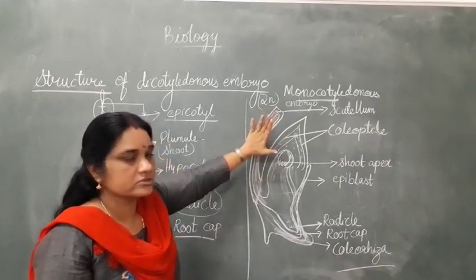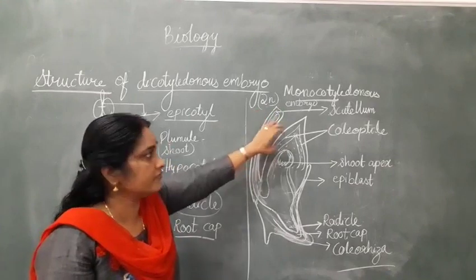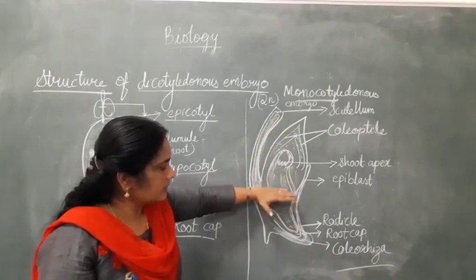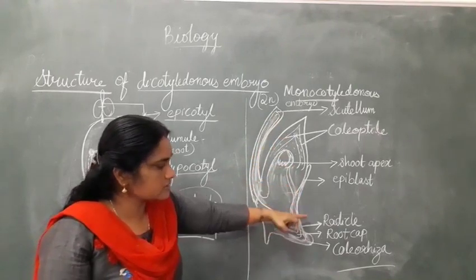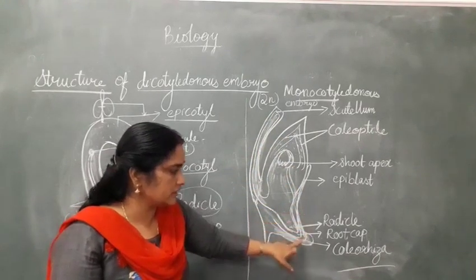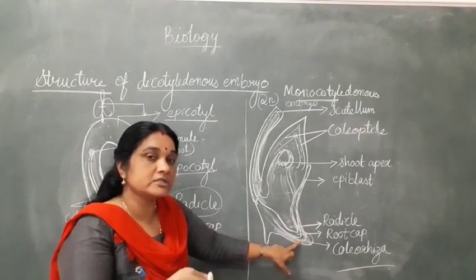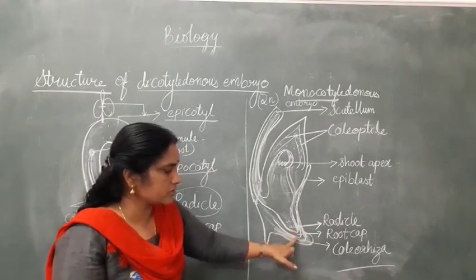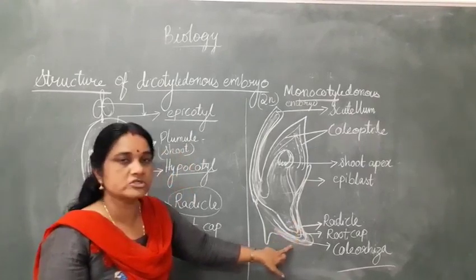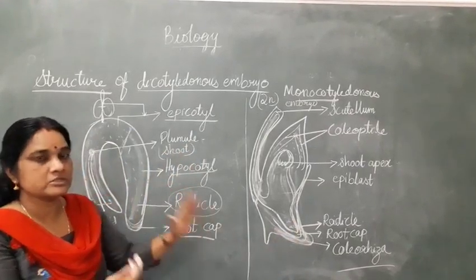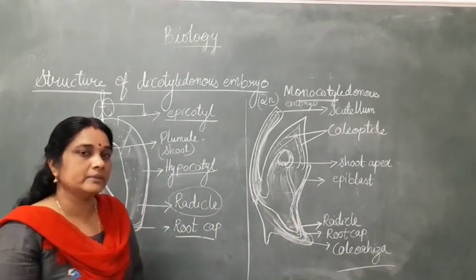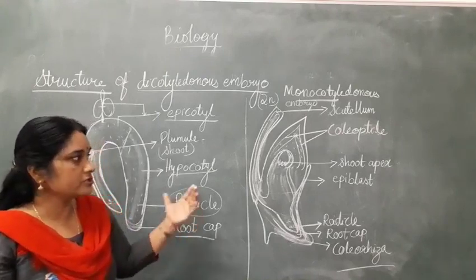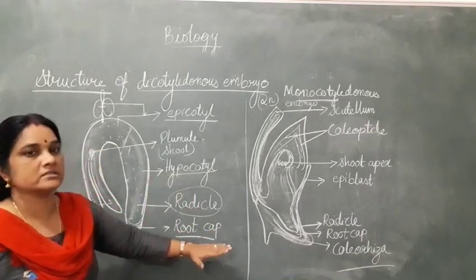This is a very important part. Please draw the diagram neatly, label the parts, and learn. This will be asked as a diagrammatic question — you have to label the parts, identify each part, and state its function. For example: the coleoptile covers the shoot apex; below the embryonal axis is the radicle, which gives rise to the root system, covered by the root cap; and the whole thing is covered by the sheet-like coleorhiza. Please see the slides, do the comparative analysis, draw diagrams, write notes, and submit.